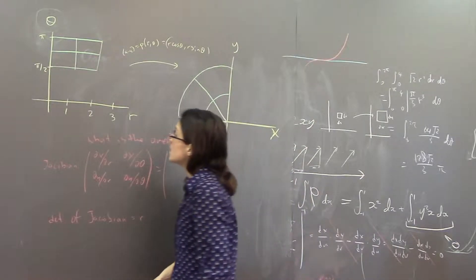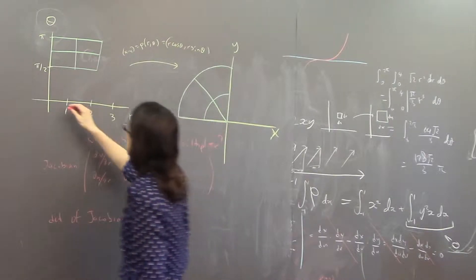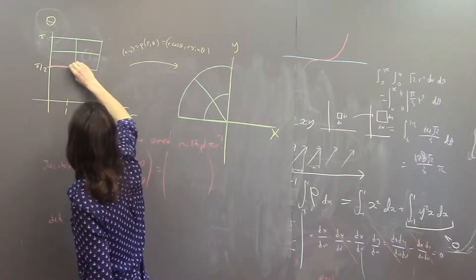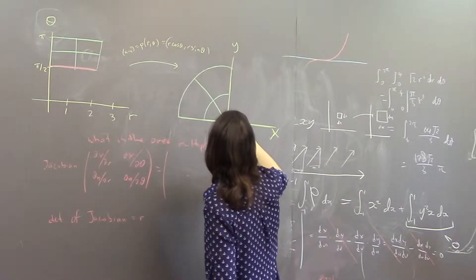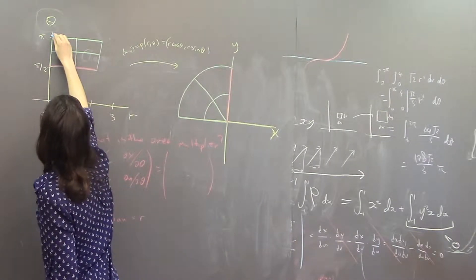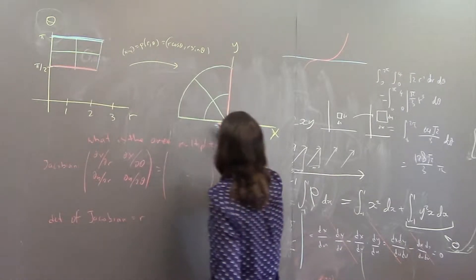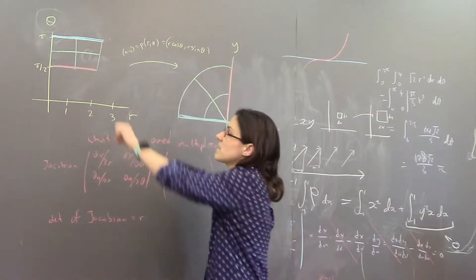For instance, if I take theta is constant at pi over 2 and r is going from 0 to 2, that would be here. And if I had theta is constant at pi and r is going from 1 to 2, that would go to here. So you can see how this rectangle sort of moved around.